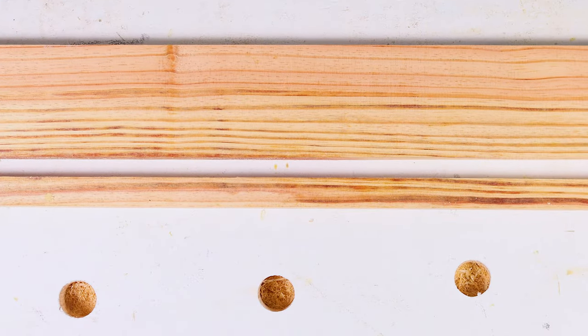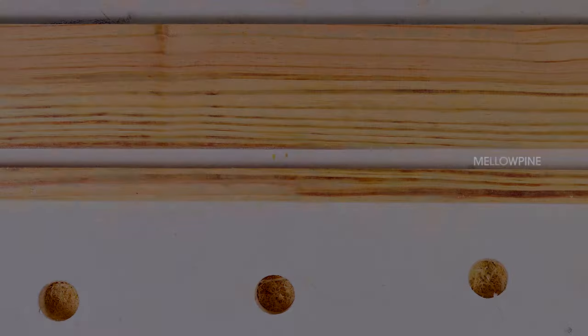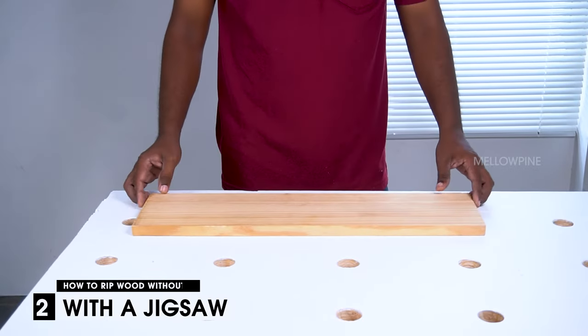With that, you've successfully completed ripping the wood with a circular saw. The next method for ripping is by using a jigsaw.